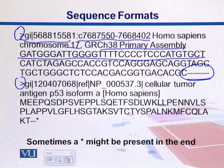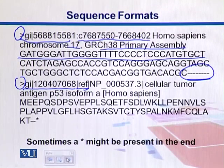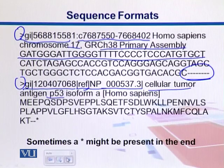We can also see a protein sequence below. It has an ID marked as a reference sequence. Reference sequences are the curated sequences in a subsection of NCBI called RefSeq, which maintains standard sequences to avoid redundancies. These are the primary representative sequences, as opposed to alternative splice variants. The protein is cellular tumor antigen p53 isoform. In FASTA files, sequences sometimes end with a star sign.